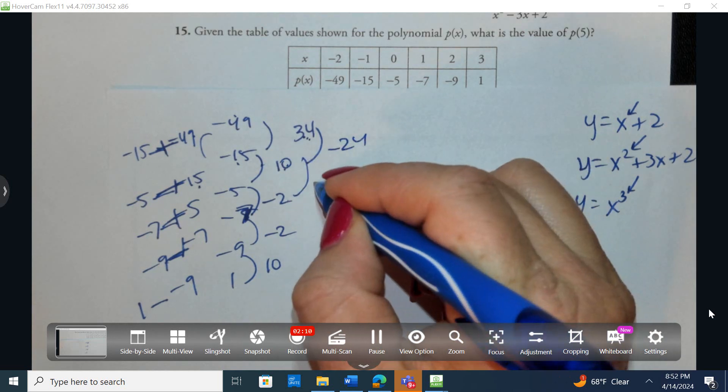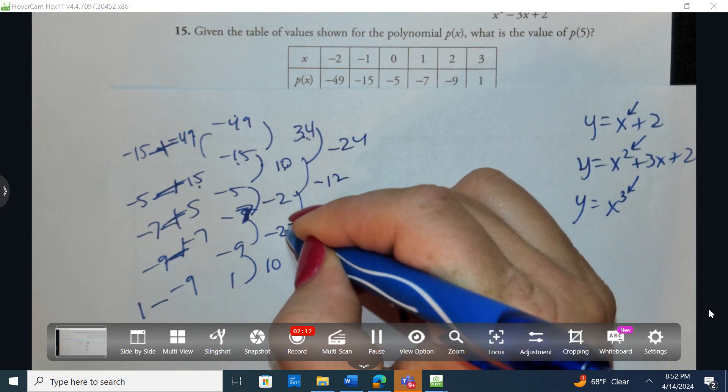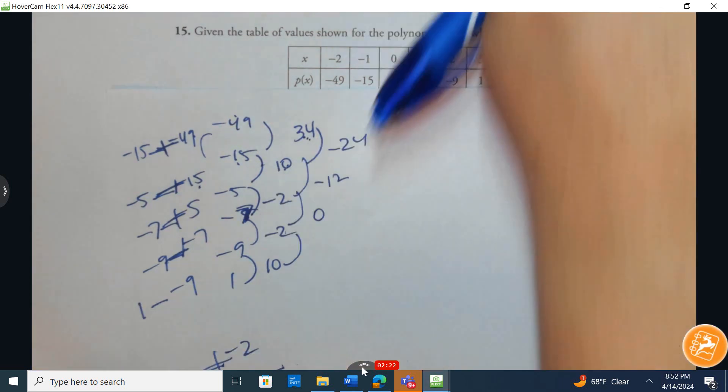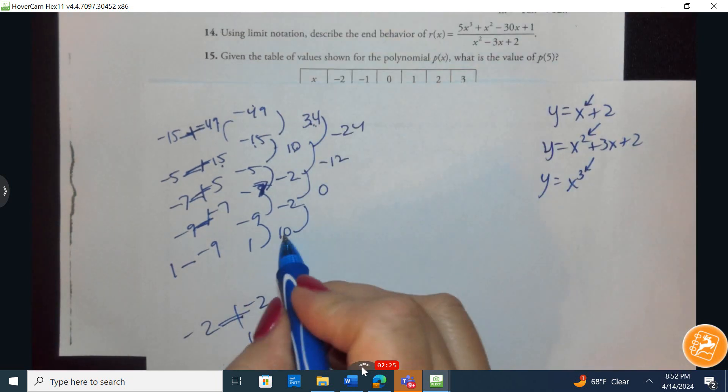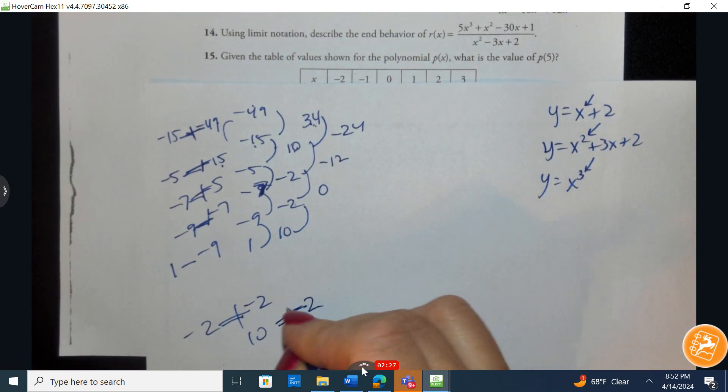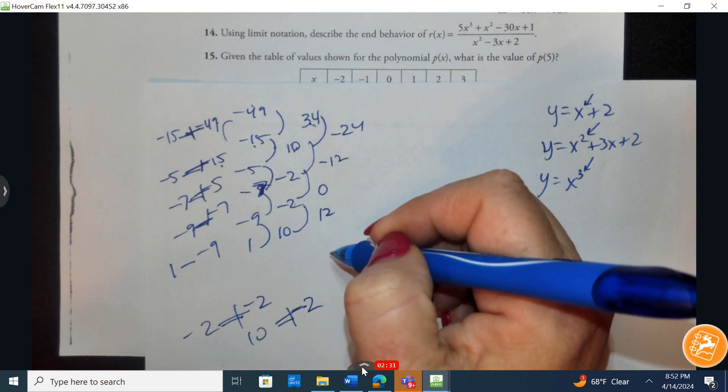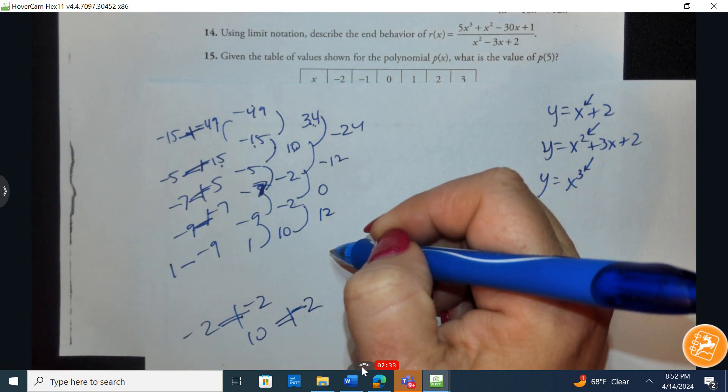Negative 2 subtract 10 is negative 12. Negative 2 subtract negative 2 gives me 0. Let me zoom out here for a better view. 10 subtract negative 2 gives me 12. The second difference is not the same, so if the second difference is not the same, it's not quadratic. Let's try the third difference.